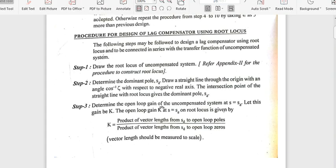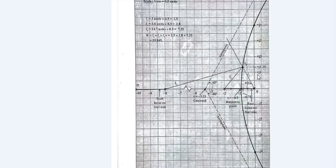The next step is to determine the open loop gain K of the uncompensated system at S = SD. K equals the product of vector lengths from SD to all open loop poles divided by the product of vector lengths from SD to all open loop zeros. From the graph, the poles are at 0, −2, and −8, and there are no zeros.